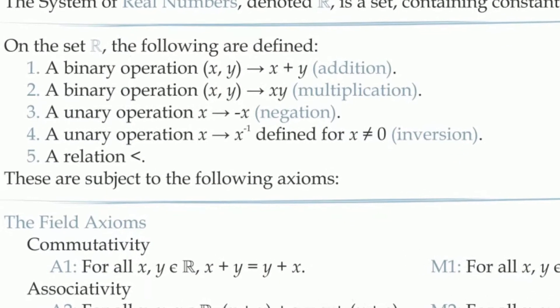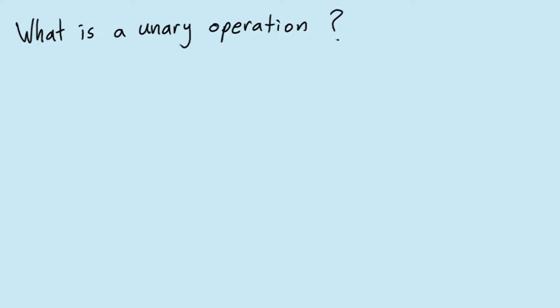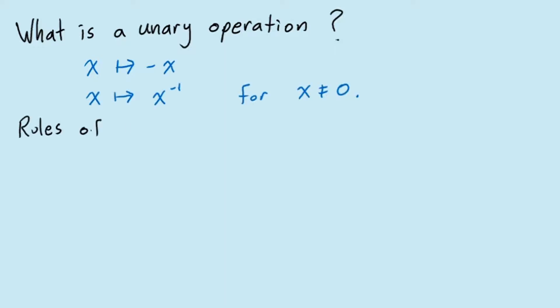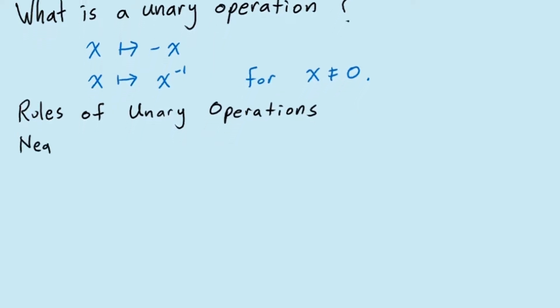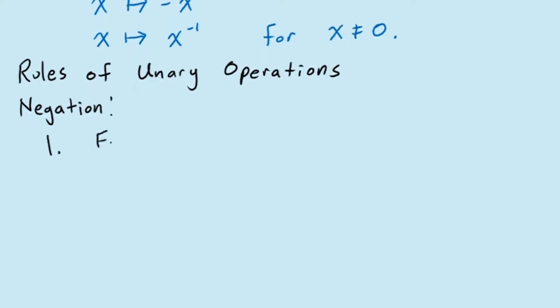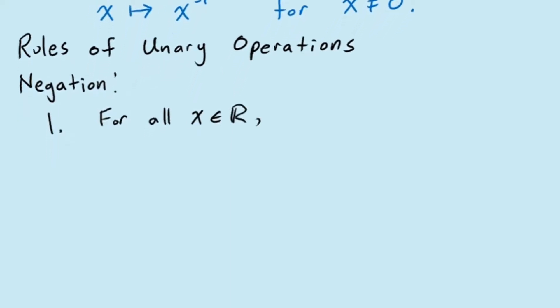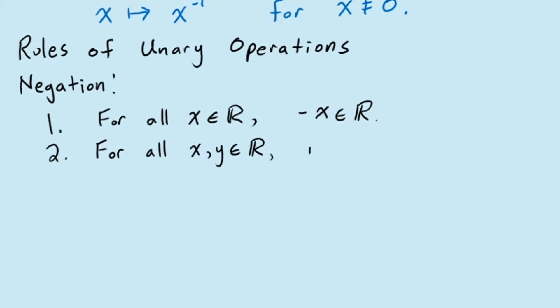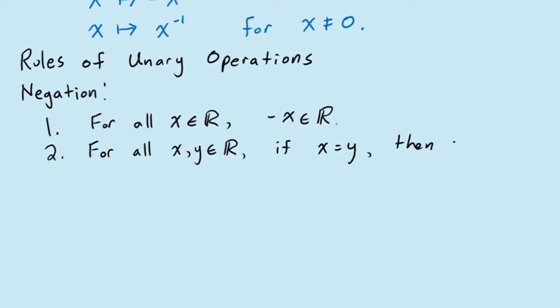The next part of the definition says that there are two unary operations. We can think of unary operations as being like functions that take one input and return one output. These can also be defined using two properties, similar to the ones used to define binary operations. Looking first at negation: for any real number x, negative x will also be a real number. We also have a uniqueness property that says if we input the same number, we get the same output — that is, if x equals y, then negative x will also be equal to negative y.